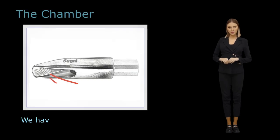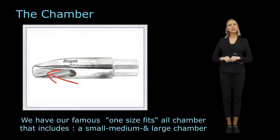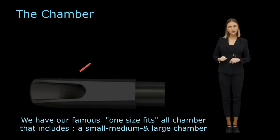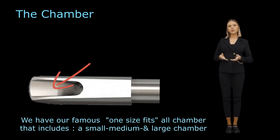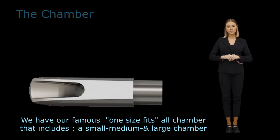The chamber is the open space in the middle of the mouthpiece, situated between the floor and the bore. A larger chamber produces a rich and wide sound, while a smaller chamber results in a more focused sound.